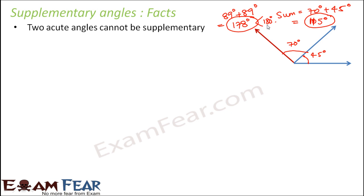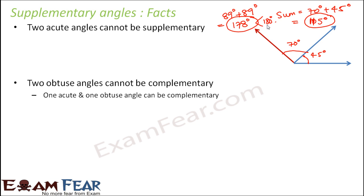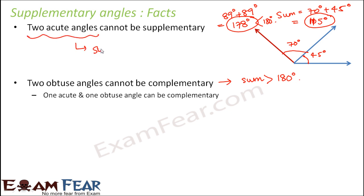Two obtuse angles also cannot be supplementary. Each obtuse angle is greater than 90 degrees, so when you add two obtuse angles the sum becomes greater than 180 degrees. With two acute angles the sum is less than 180 degrees, and with two obtuse angles the sum is greater than 180 degrees. So neither two acute angles nor two obtuse angles can be supplementary.